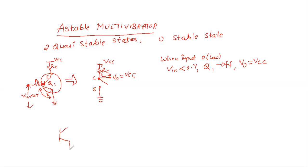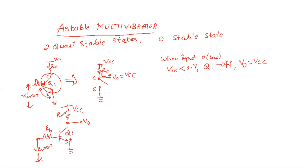Similarly, if you apply an input voltage greater than 0.7V, what will happen? The emitter terminal is grounded, and at the base I am applying an input voltage. When V_input is greater than 0.7V — greater than the cut-in voltage — transistor Q1 will start to conduct, and the collector and emitter terminals will be short-circuited.